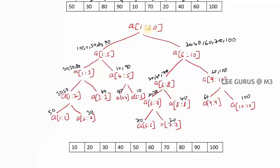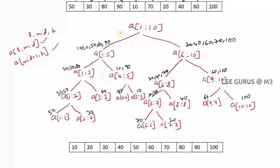It will divide this array into two parts based on the mid value. If I take the middle value using (first + last) / 2, I get mid = 5 when low = 1 and high = 10, since (1 + 10) / 2 = 5. Given the mid value, I divide the array into a[l..mid] and a[mid+1..high].